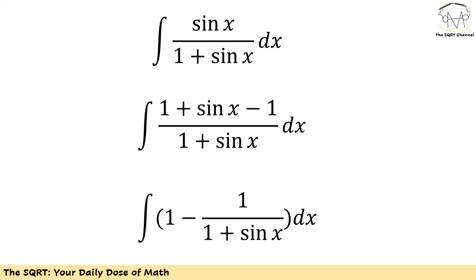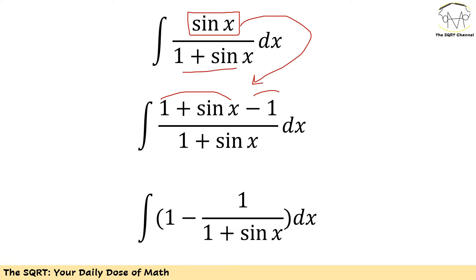To solve this problem I am going to rewrite this fraction in another form. I am going to write sine of x as 1 plus sine of x minus 1 — this will match the denominator of the fraction. Keeping the denominator as is, I now have 1 plus sine of x minus 1 in the numerator. After applying this, you will see I need to evaluate the integral of 1 minus 1 over 1 plus sine of x, dx.